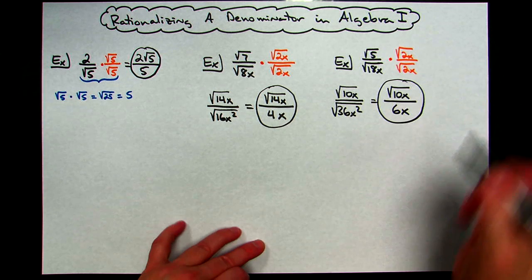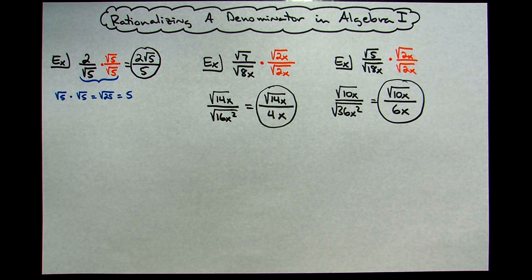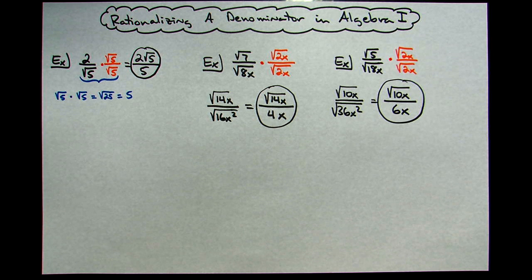So those are three short examples of how you might rationalize a denominator in an Algebra 1 class. If you like the video, I'd really like for you to hit the Like button down in the corner. Thanks.